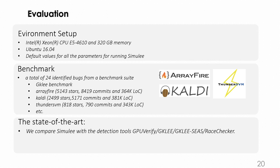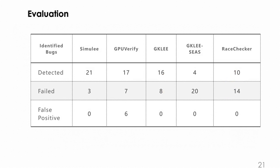We collected real-world projects as our benchmark and compared the performance between Simuli and state-of-the-art approaches. We can see here, for the identified bug set, Simuli can detect 21 bugs and failed 3, with no false positives. While other tools like GPVerify, GKLee, GKRACE, and GRace also failed many bugs.